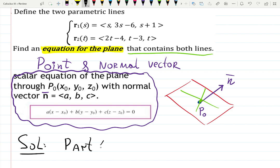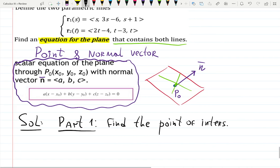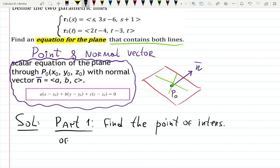So solution will have two parts. Part one is to find the point of intersection of r₁ and r₂.